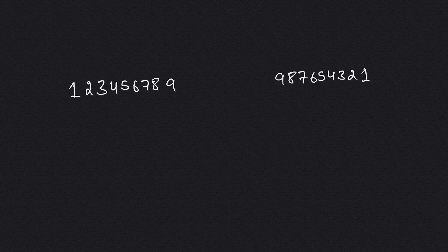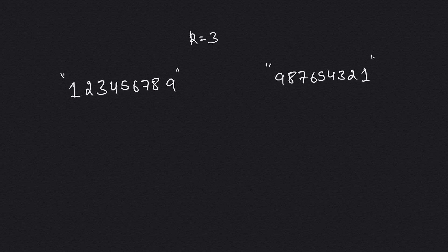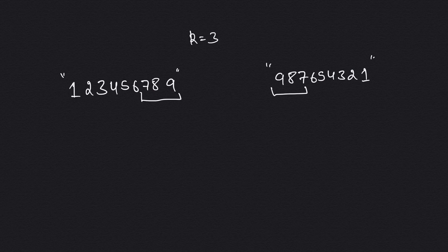Let's see how we can solve this problem. The question asks us to remove k elements from the given string to get the smallest possible number. If I ask you which three numbers to remove from each example to get the smallest number — in example one we remove certain digits, in example two we remove certain digits. Let's see why.